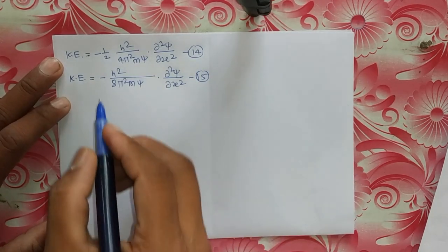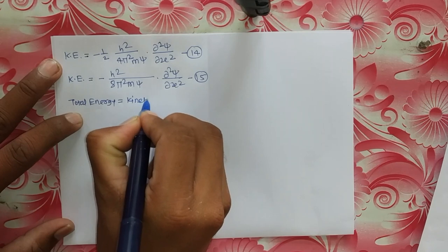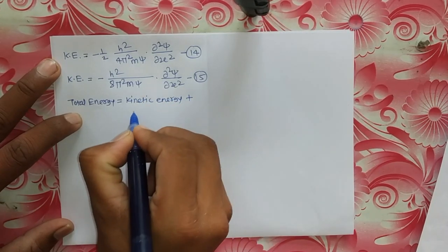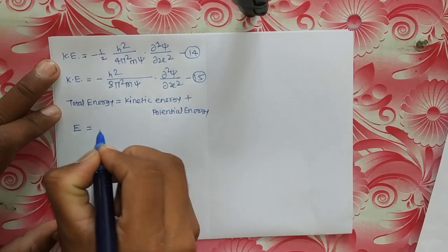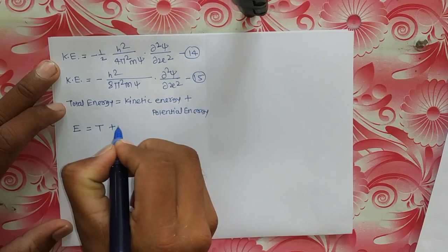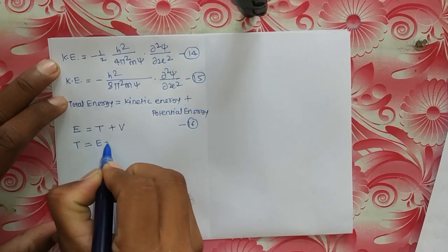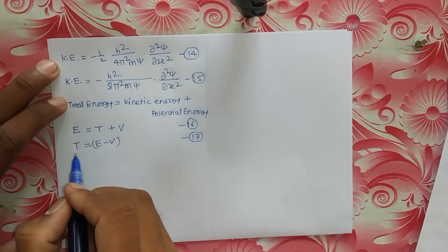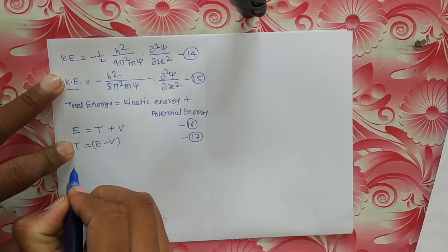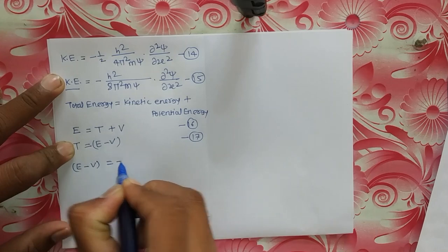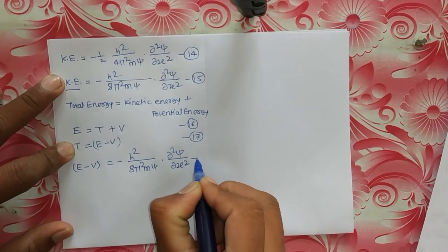We know that total energy is the sum of kinetic energy and potential energy: E equals T plus V, which is equation number 16. Rearranging for kinetic energy, T equals E minus V, equation number 17. Substituting kinetic energy from equation 17 into equation 15, we get E minus V equals minus h²/(8π²m·psi) times d²psi/dx². This is equation number 18.